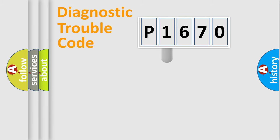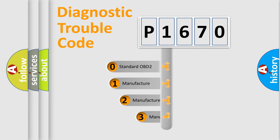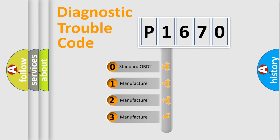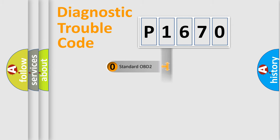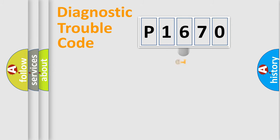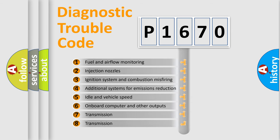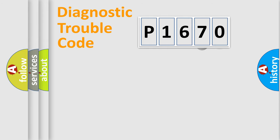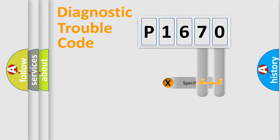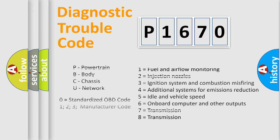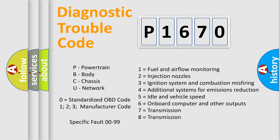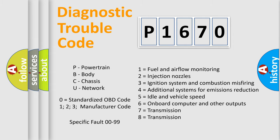This distribution is defined in the first character of the code. If the second character is expressed as zero, it is a standardized error. In the case of numbers 1, 2, or 3, it is a more specific car-manufacturer expression. The third character specifies a subset of errors. Only the last two characters define the specific fault of the group. This division is valid only when the second character is expressed by the number zero.